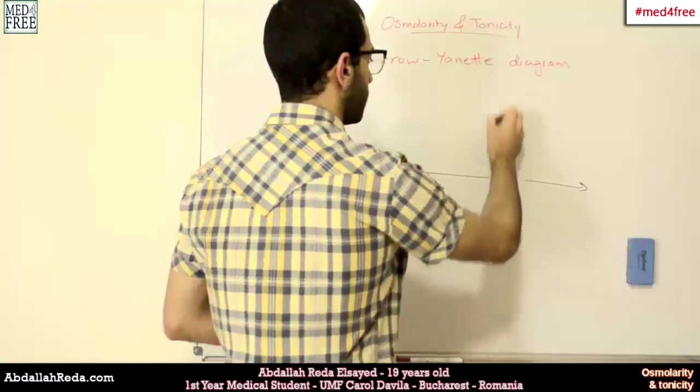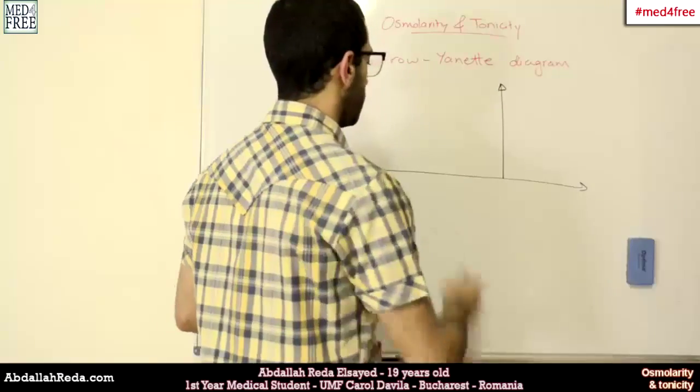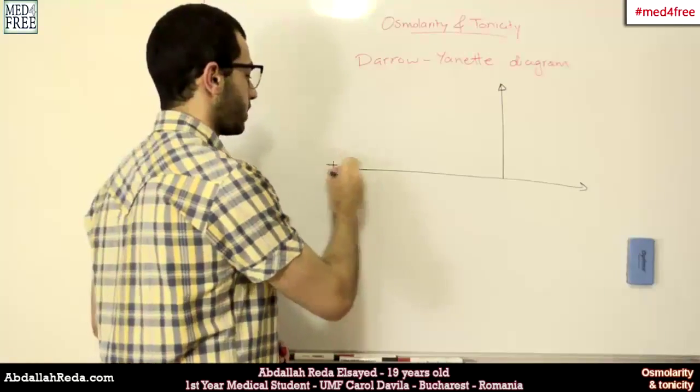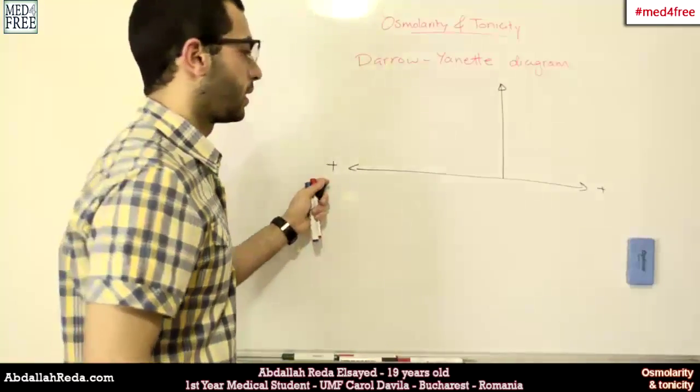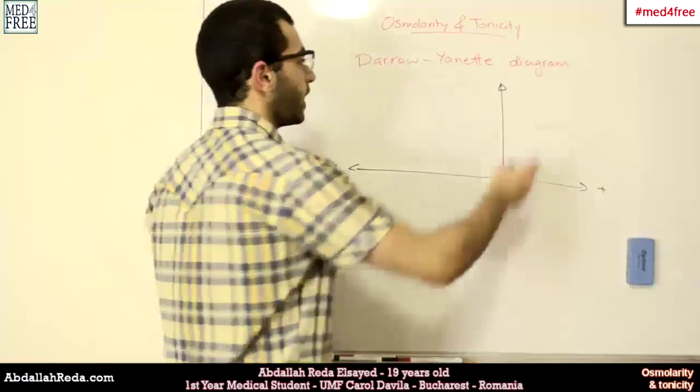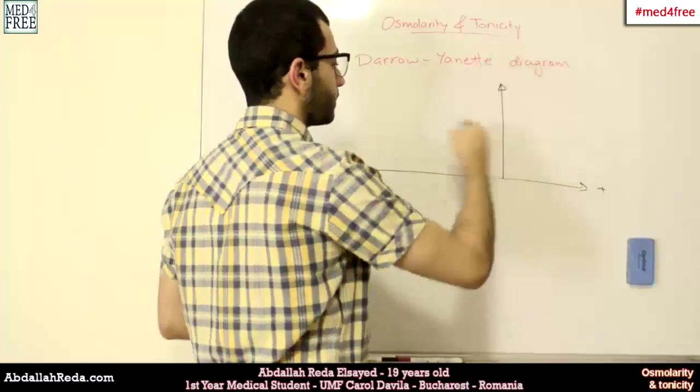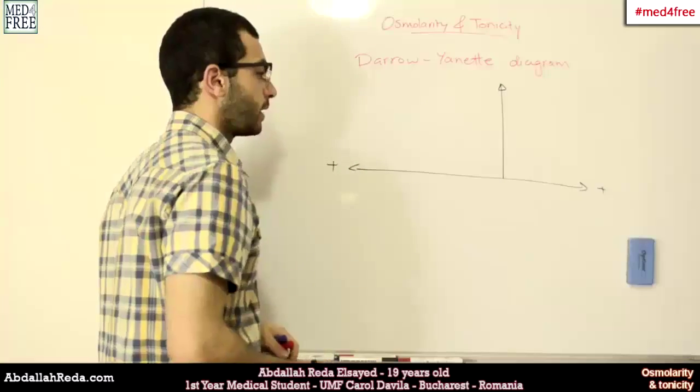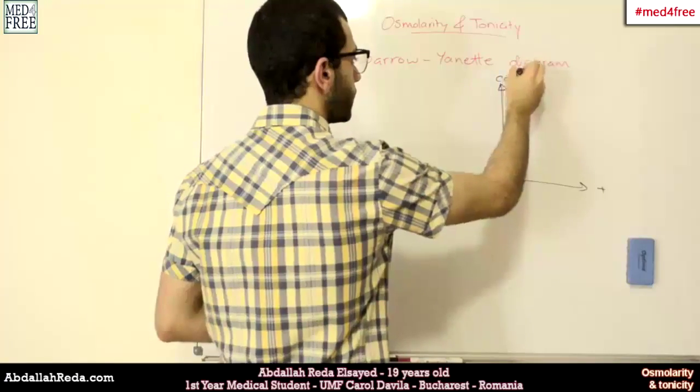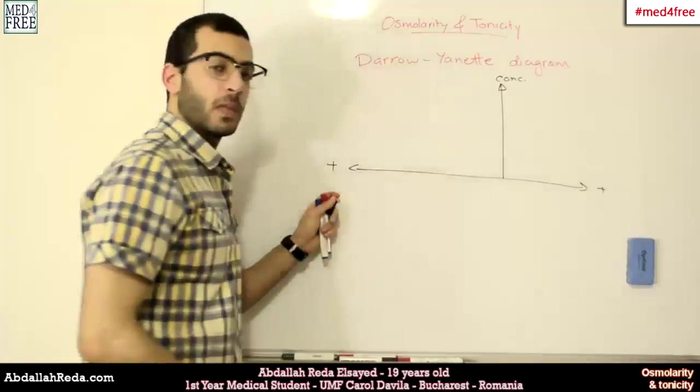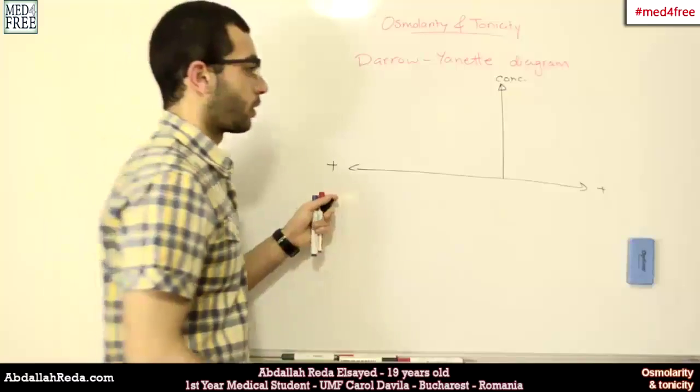We have the x-axis with two positive sides, because we have positive values here, and we have the y-axis right there. The y-axis will be for the concentration, and the x-axis will be for the volume.